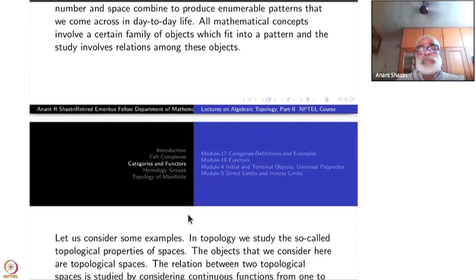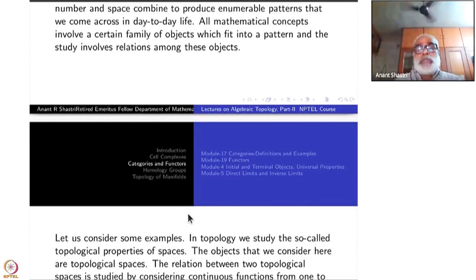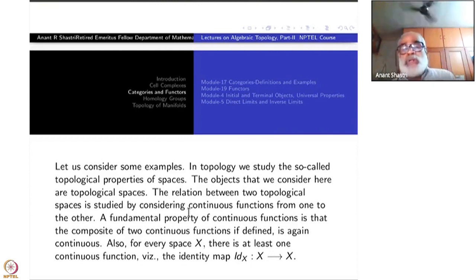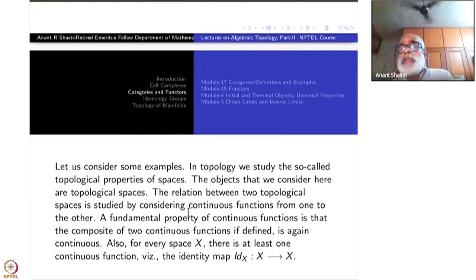In topology, we study the so-called topological properties of topological spaces. The objects considered here are topological spaces, but the relations among them are what are called continuous functions. The fundamental property of continuous functions is that the composite of two continuous functions is a continuous function, and the identity map from the space to itself is also continuous.